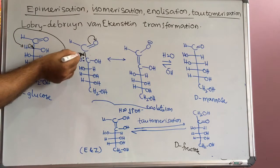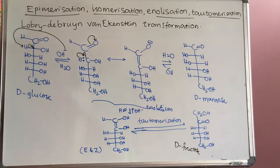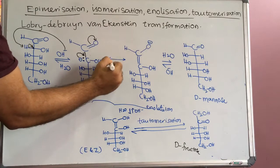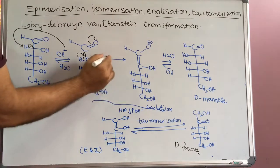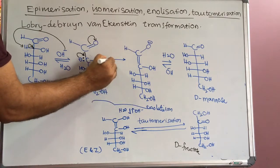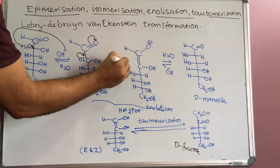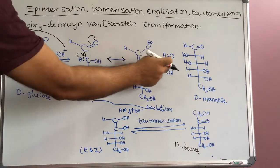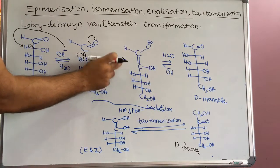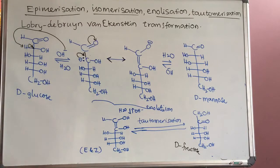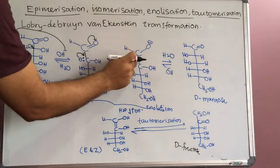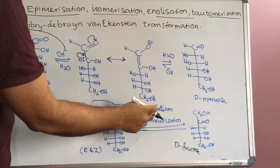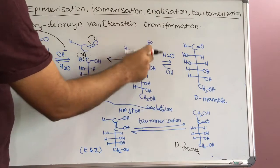Already one bond is there; it will come into a double bond. This is resonance between these two structures — this is the resonance symbol. These are equilibrium symbols — carefully you have to observe: this is equilibrium, this is resonance. And this intermediate is called the enolate ion; it carries a negative charge, that is why it is called the enolate ion.